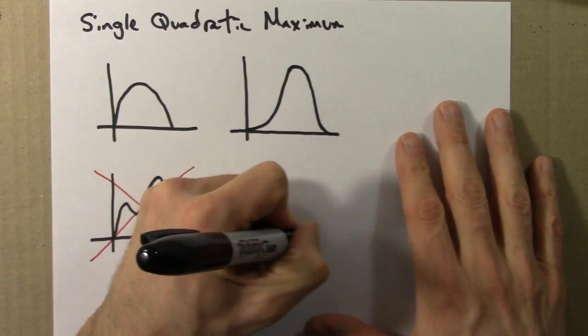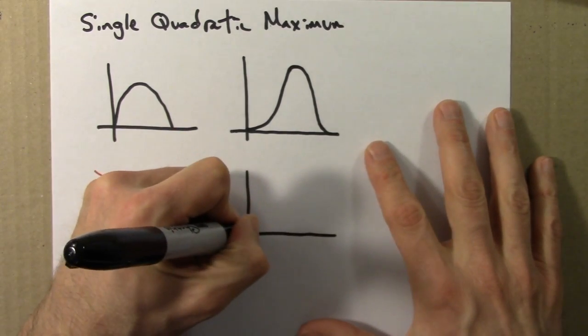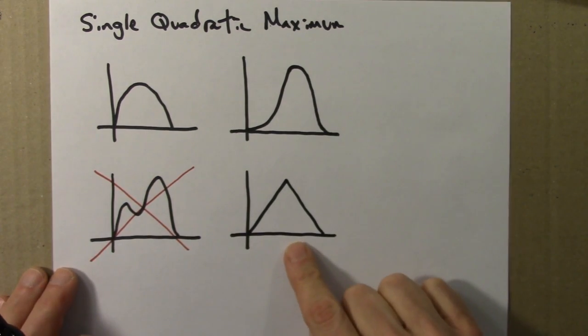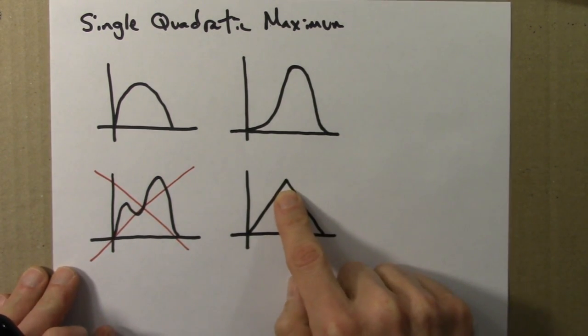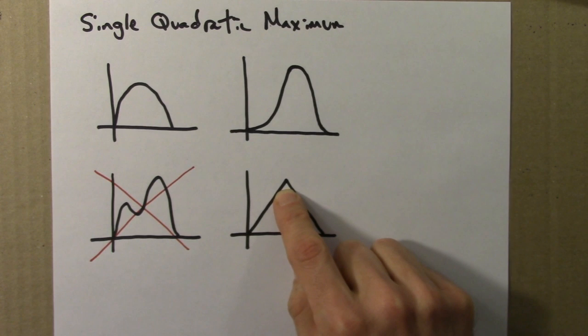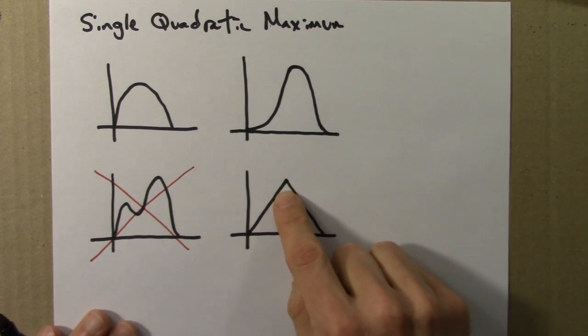A few more counterexamples. A function like this. This has a single maximum, a nice peak, but it's not a quadratic maximum. If you zoom in on this point, it doesn't start to look like a parabola. It keeps looking like a point. The idea is this is infinitely sharp.